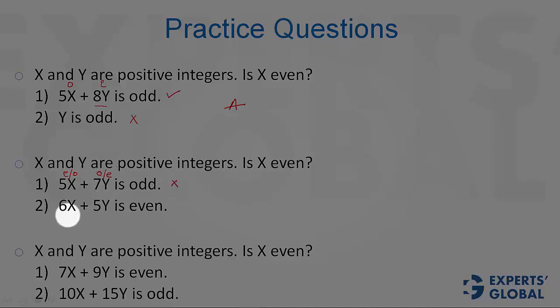Look at statement 2. 6X is going to be even, irrespective of whether X is even or odd. This is even. 5Y can be even or odd, but if the sum is even, then 6X plus 5Y suggests that 5Y should also be even. Only even plus even can be even.